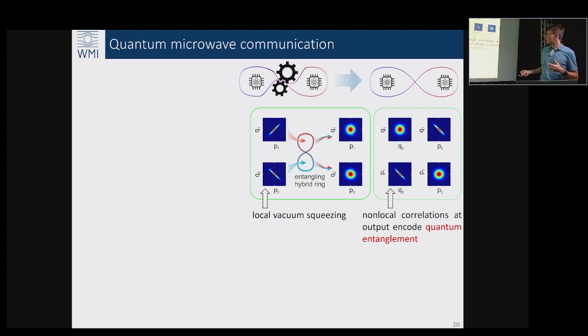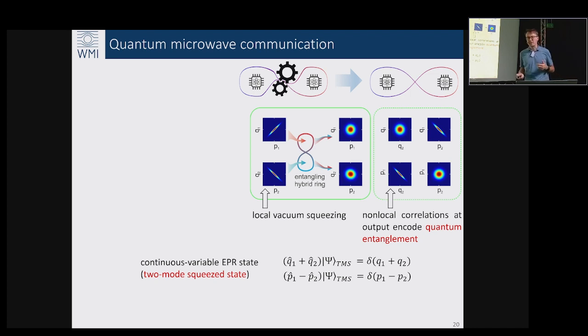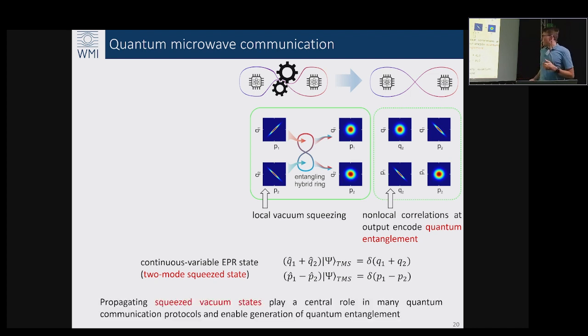Then your outputs actually look classically like classical thermal noise, nevertheless with strong non-local correlations between non-local field quadratures. That's basically a conversion of local non-classicality into the non-local one, which embodies the quantum entanglement. This is how we generate our propagating two-mode squeezed states which we can then use as a resource.